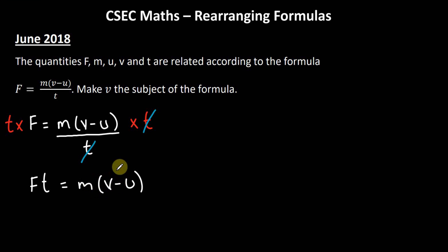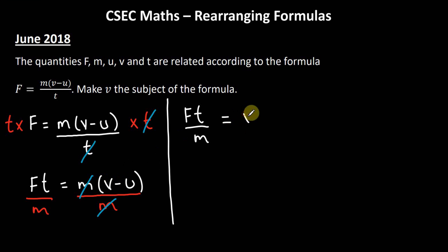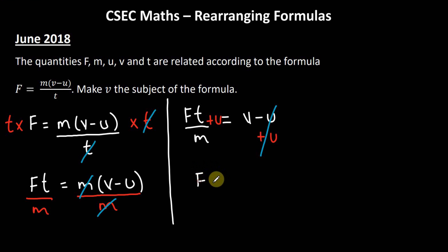Next, we can divide both sides by m, since we're multiplying the entire bracket by m. M cancels m, leaving us with ft/m = (v − u). Because there's no longer anything outside the bracket, we can remove the bracket. To get rid of minus u, we add u to both sides. Minus u plus u is 0, so we're left with ft/m + u = v. This is our solution — we have made v the subject.